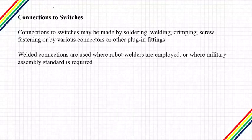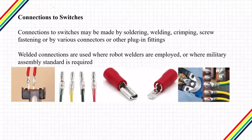Connections to switches may be made by soldering, welding, crimping, screw fastening, or by various connectors or plug-in fittings. The most common is soldering, which can be used for low voltage and current electronic applications. For higher-rated circuits and applications, welded connections are advised. The most common type of connections, however, are the crimping types, which have many variations.